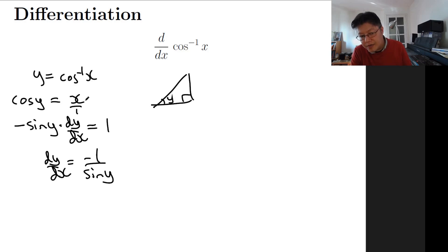We know that cos is adjacent over hypotenuse. We can now fill in this triangle - the adjacent is x, the hypotenuse is 1, and we can use Pythagoras to get the opposite side, so it should be 1 minus x squared, all rooted.